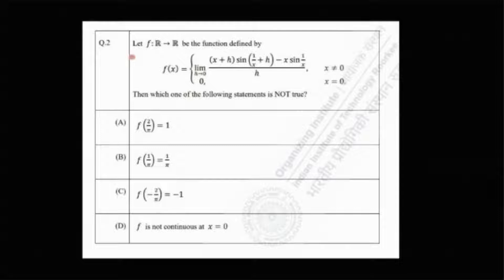Now the question says that let f be a function mapping from r to r, here r means the set of real numbers, with a function defined by f(x) equals limit h tends to 0, (x+h)sin(1/(x+h)) minus x sin(1/x) all divided by h when x is non-zero and f takes the value 0 when x equals 0. Then which one of the following statements is not true? That means one of them is actually false. We have to find out which one is it.